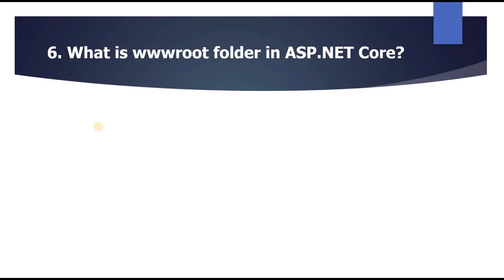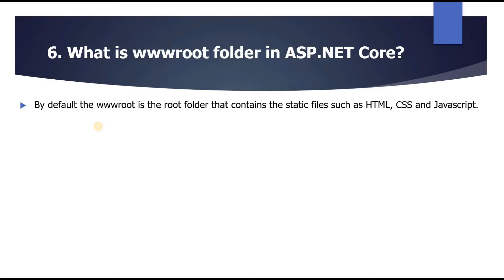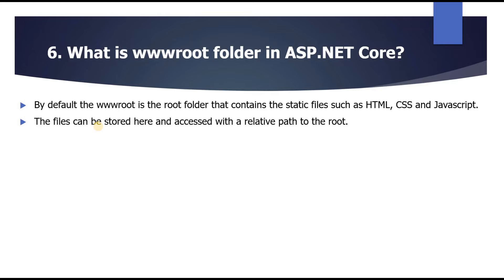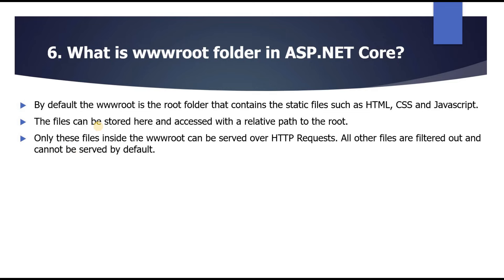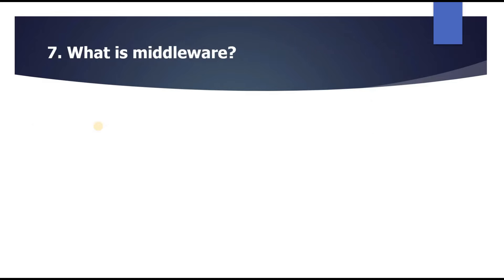The next question is: what is the wwwroot folder in ASP.NET Core? By default, wwwroot is the root folder that contains static files such as HTML, CSS, and JavaScript. Files can be stored here and accessed with a relative path to the root. Only files inside wwwroot can be served over HTTP requests — all other files are filtered out and cannot be served by default.